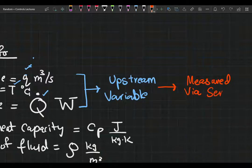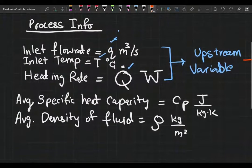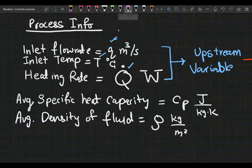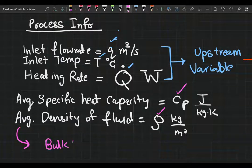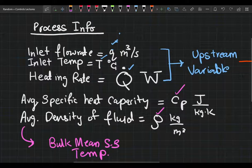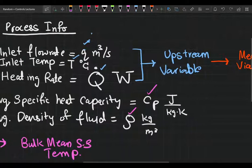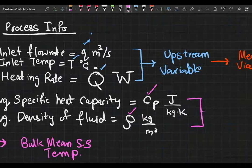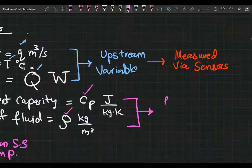Next up in the last two rows, as you can see, we have the heat capacity CP and the average density of fluid. By average I mean at bulk mean steady state temperature, whatever that may be. So we have our fluid properties right here.